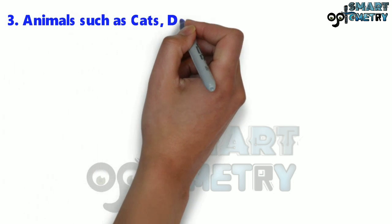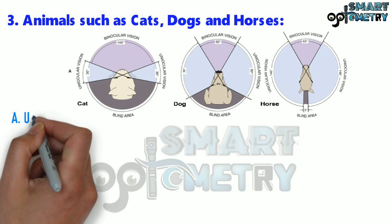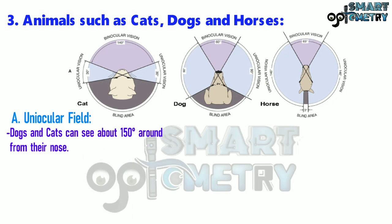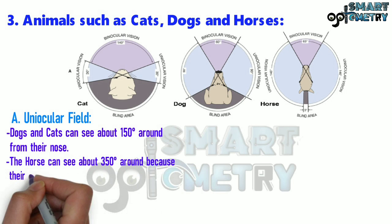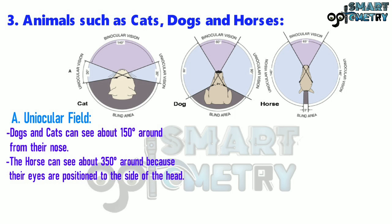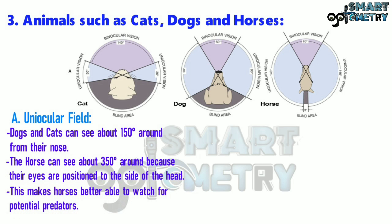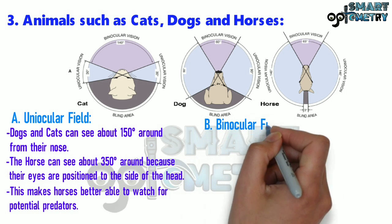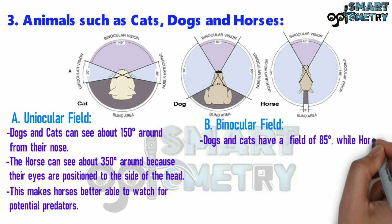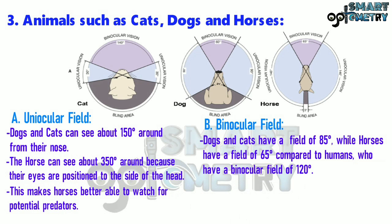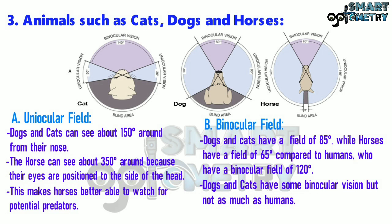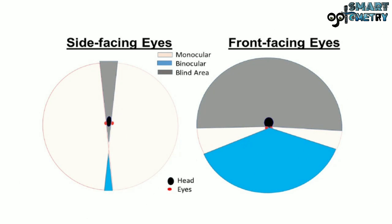3. Animals such as cats, dogs, and horses. A. Uniocular field: dogs and cats can see about 150 degrees around from their nose. The horse can see about 350 degrees around because their eyes are positioned to the side of the head, making horses better able to watch for potential predators. B. Binocular field: dogs and cats have a field of 85 degrees while horses have a field of 65 degrees, compared to humans who have a binocular field of 120 degrees. Dogs and cats have some binocular vision but not as much as humans. This picture compares the monocular and binocular visual fields of animals and birds with side-facing and front-facing eyes.